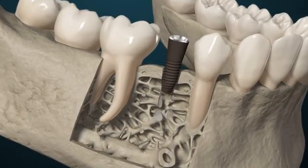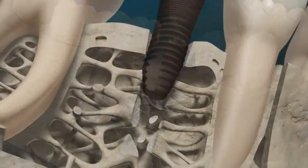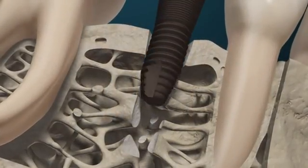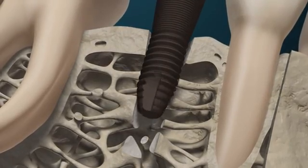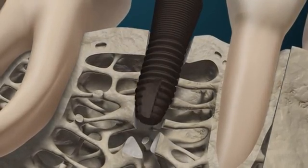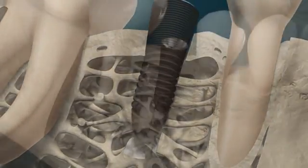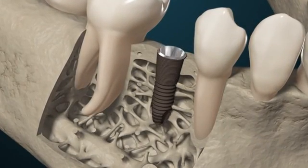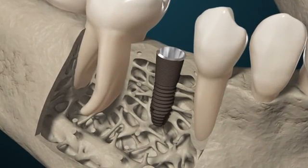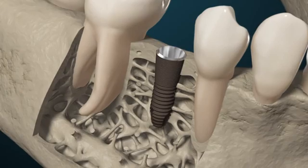Osseointegration, or secondary implant stability, requires a highly complex sequence of additional biodynamic processes. This is facilitated by finely tuned communication between the main actors of wound healing — the cells.